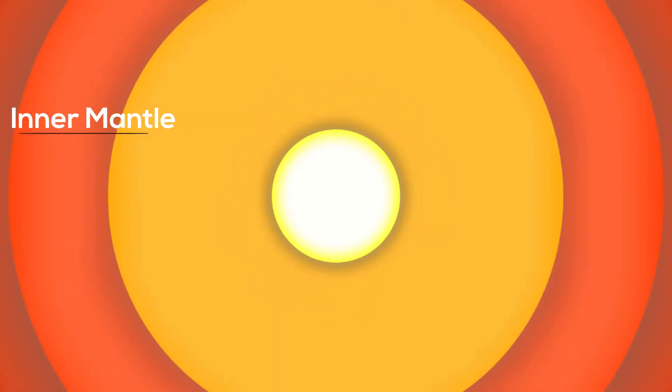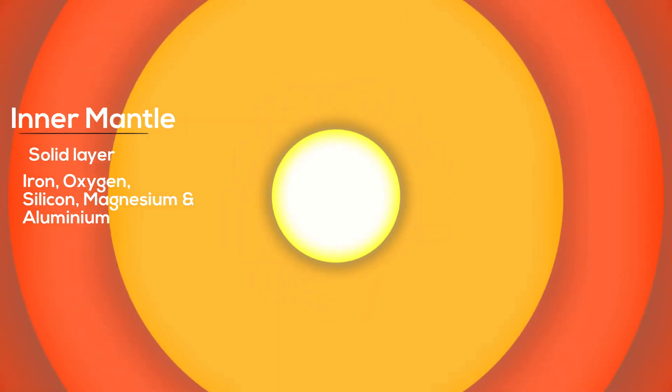The inner mantle is a solid layer of iron, oxygen, silicon, magnesium, and aluminum. It's 2,890 kilometers deep with a temperature of 3,000 degrees Celsius.